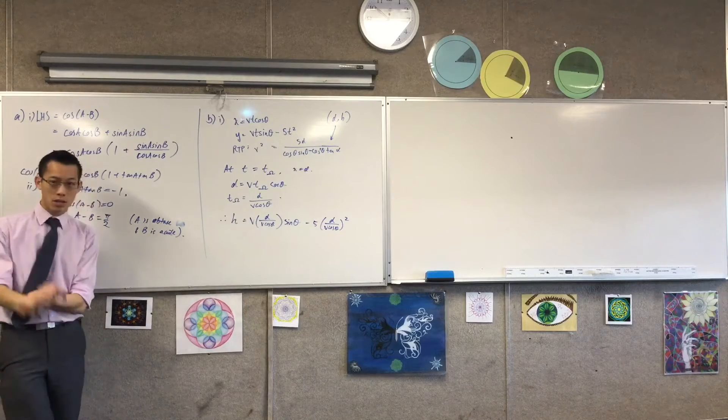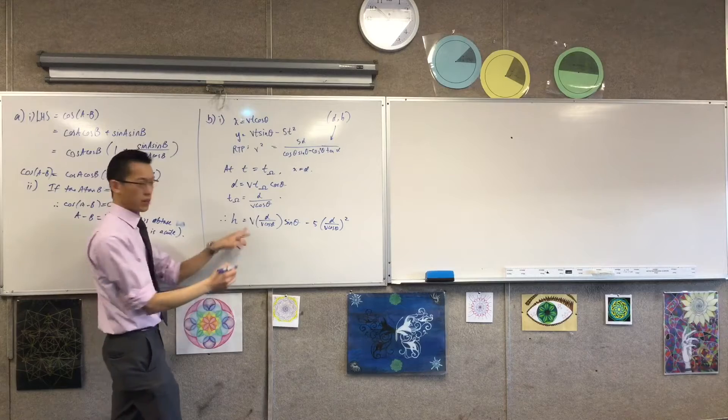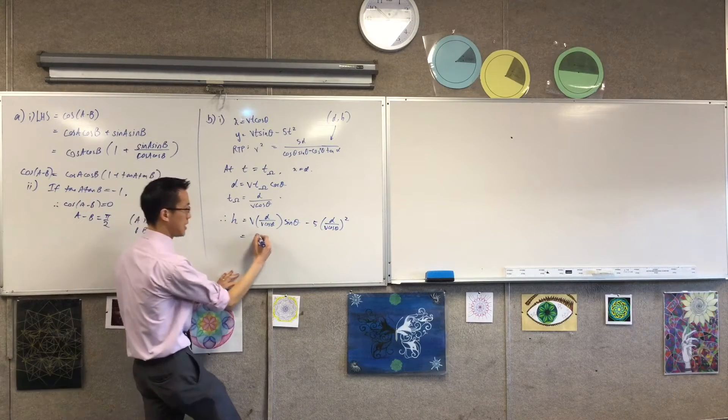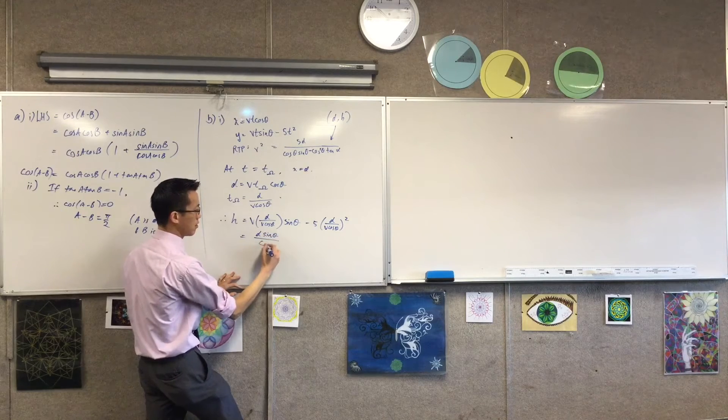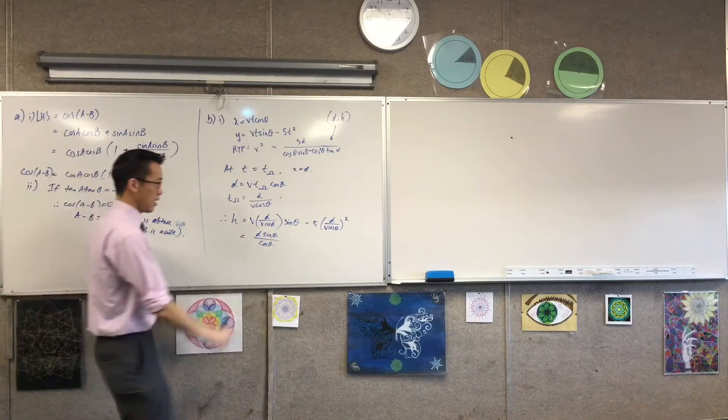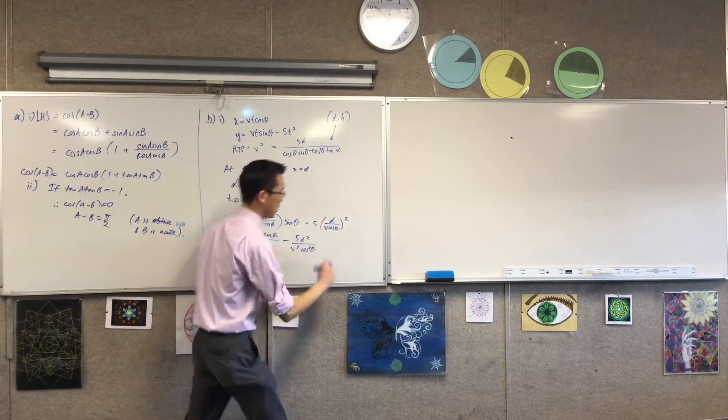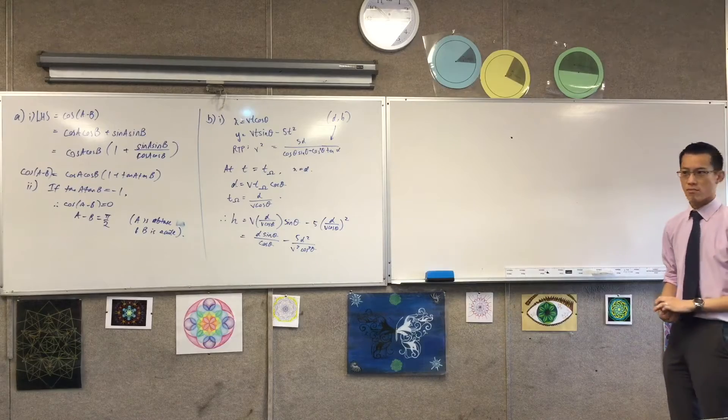Now, I'll do a tiny bit of tidying up here. It looks like I'm going to lose the v's on this side over here. So I'm just going to get d sin theta on cos theta. Have I just cancelled out? Take away five d squared on v squared cos squared theta. How's it looking? Happy? Yeah.